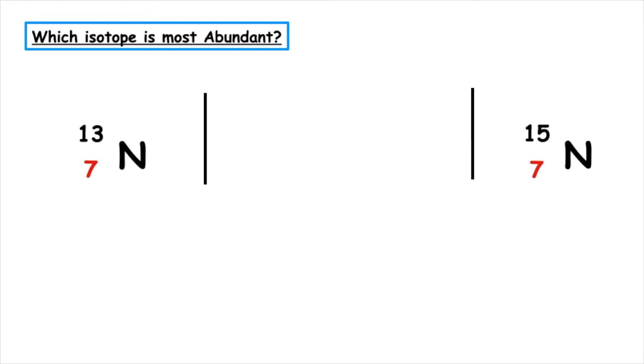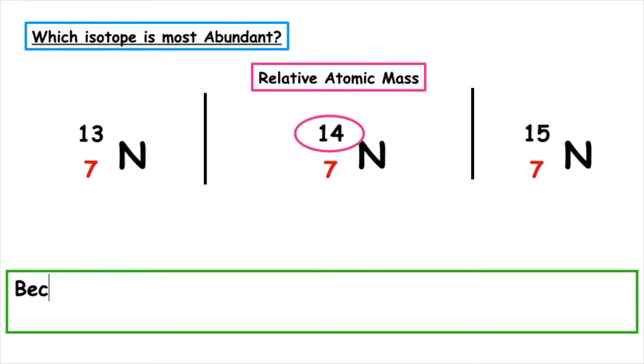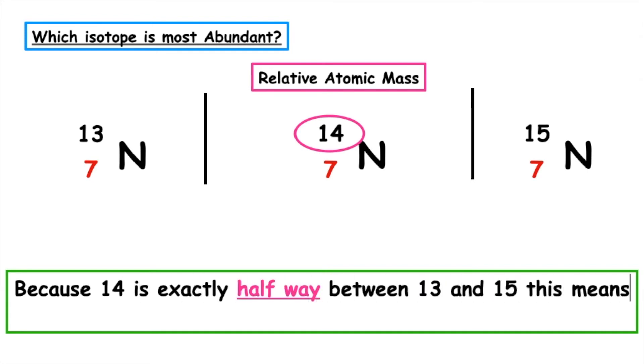For this example, we've been given nitrogen 13 and nitrogen 15. If we look up the relative atomic mass of nitrogen, it's 14. Which one is it closest to? Well, 14 is exactly halfway between 13 and 15, which means we have equal quantities of each isotope.